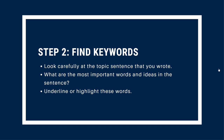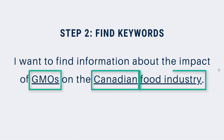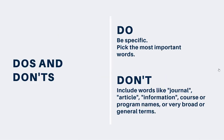Step two is identifying the keywords. Look carefully at the sentence you just wrote. What are the most important words and ideas in that sentence? It can be helpful to underline or highlight them to help you keep track. In this sentence, the key ideas are GMOs, Canadian, and food industry. Don't include words like journal, article, information, or the name of your course or program. These are too general and will give you too many results that aren't useful. Instead, try and be as specific as possible.